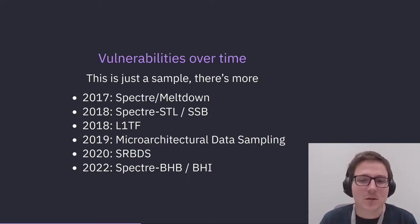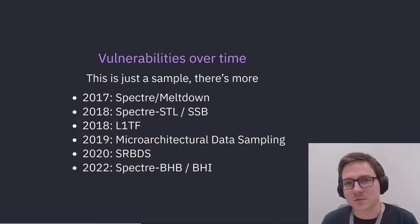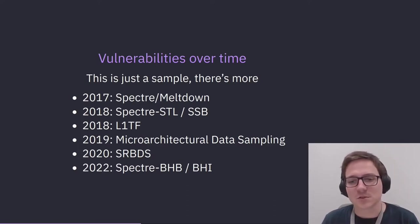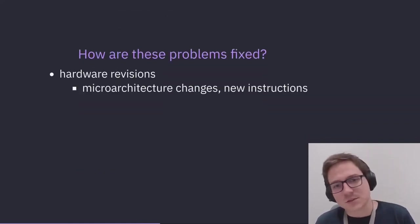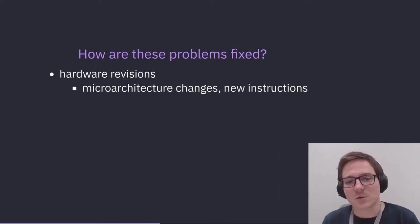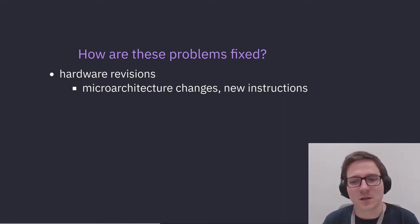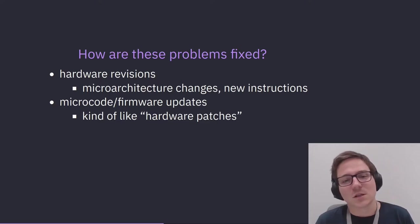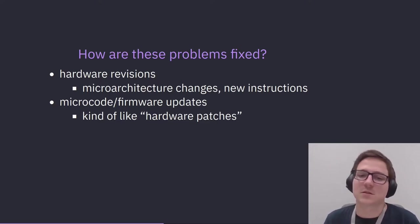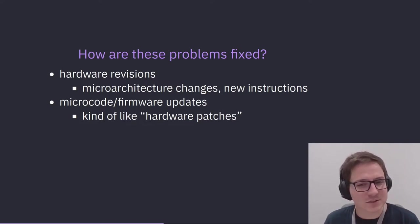Going between processes, we tend to be pretty good. You enter the kernel and exit the kernel, and that's a great place to do a bunch of flushing and apply mitigations. But within the same process, it's very difficult to prevent all speculation because you don't have a nice place for mitigations to be applied. So how do these problems get fixed? Hardware revisions — whether that's a deliberate microarchitecture change to prevent a certain thing from happening, or new instructions. There are also firmware or microcode updates, which are kind of like hardware patches. A lot of stuff you wouldn't expect can actually be changed without changing the silicon — that's hardware vendor magic.